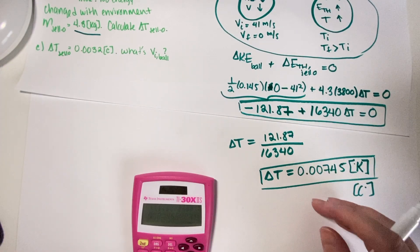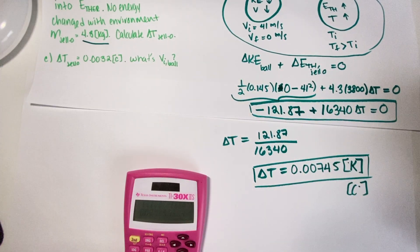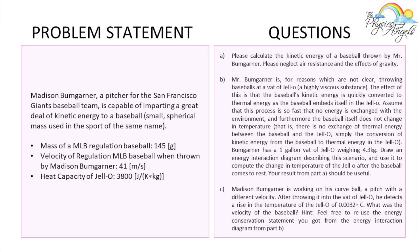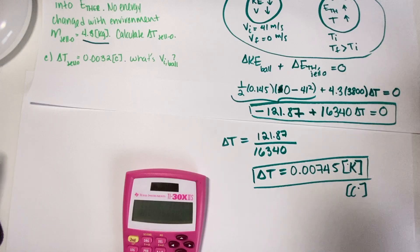Now let's put Part C on the screen. Part C says Madison Bumgarner is working on his curveball with a pitch with a different velocity. After throwing it into the vat of jello, he detects a rising temperature of 0.0032 Celsius. What was the velocity of the baseball? Hint: feel free to reuse the energy conservation statement you got from the energy interaction diagram from Part B.